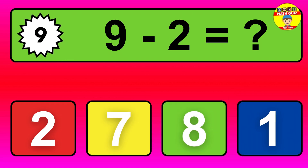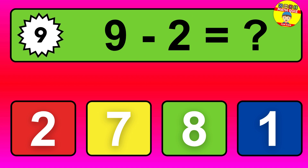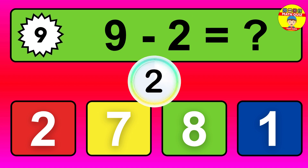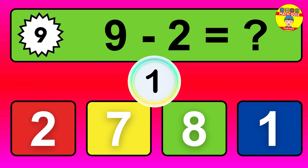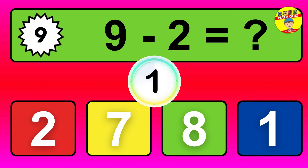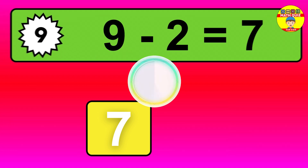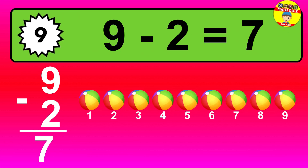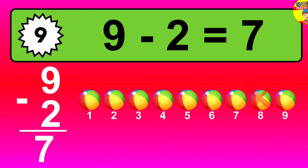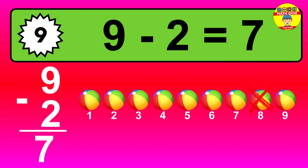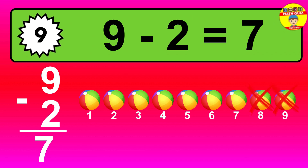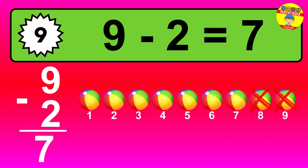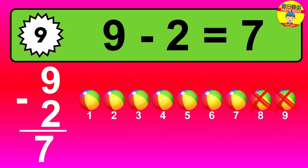Question nine: nine minus two equals what? The answer is nine minus two is seven. Let's count it. One, two, three, four, five, six, seven.